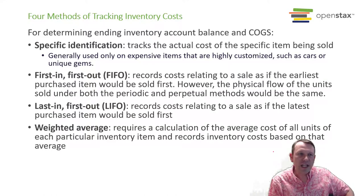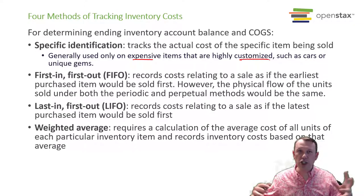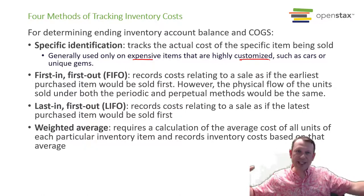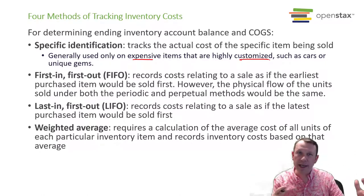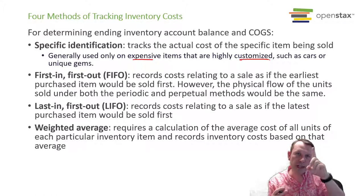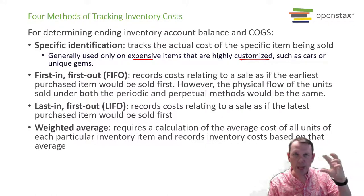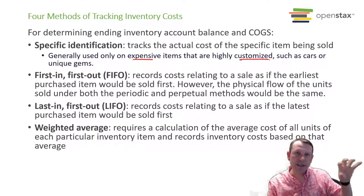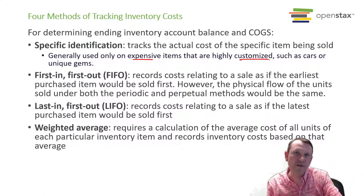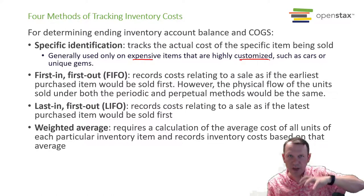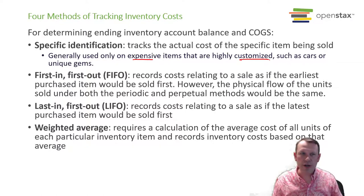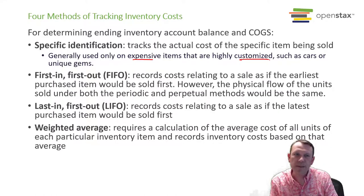The first one is specific identification. Typically this is used for items that are expensive and customized. If I'm making a large luxury yacht — big, fancy boat — that's expensive and customized. I'm going to track the inventory of my yachts with the specific identification method. I know how much each yacht cost to make; when I sell it, I can assign the cost for that yacht to that sale. Cars and unique gems are other examples — all these unique, expensive items.